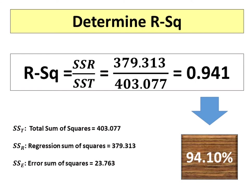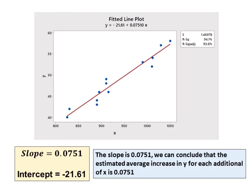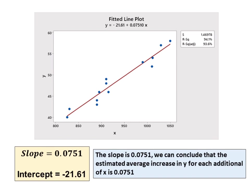We can convert the R-squared value into a percentage by multiplying it by 100%. From the scatter plot, it shows a positive linear relationship between X and Y. The scatter diagram enables us to observe the data graphically and to draw preliminary conclusions about the possible relationship between the variables. The best-fit line is Y equals minus 21.61 plus 0.0751X. The best-fit line minimizes the sum of the squares of the deviations between the observed values and the predicted values of the dependent variable, with respect to slope and intercept.